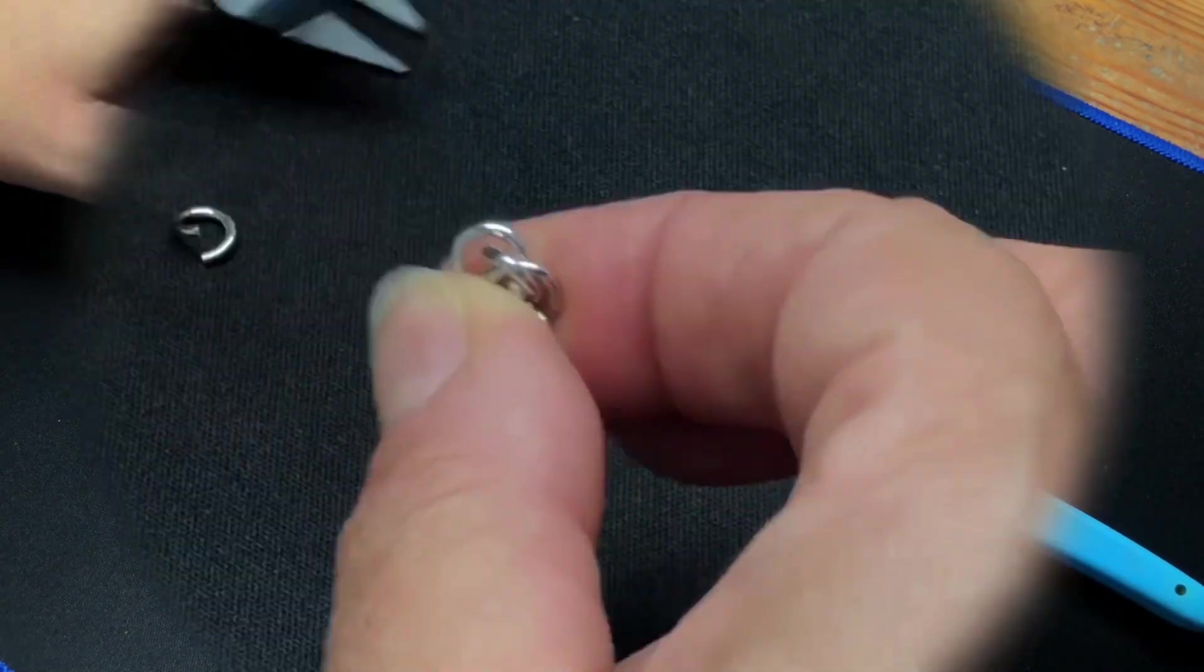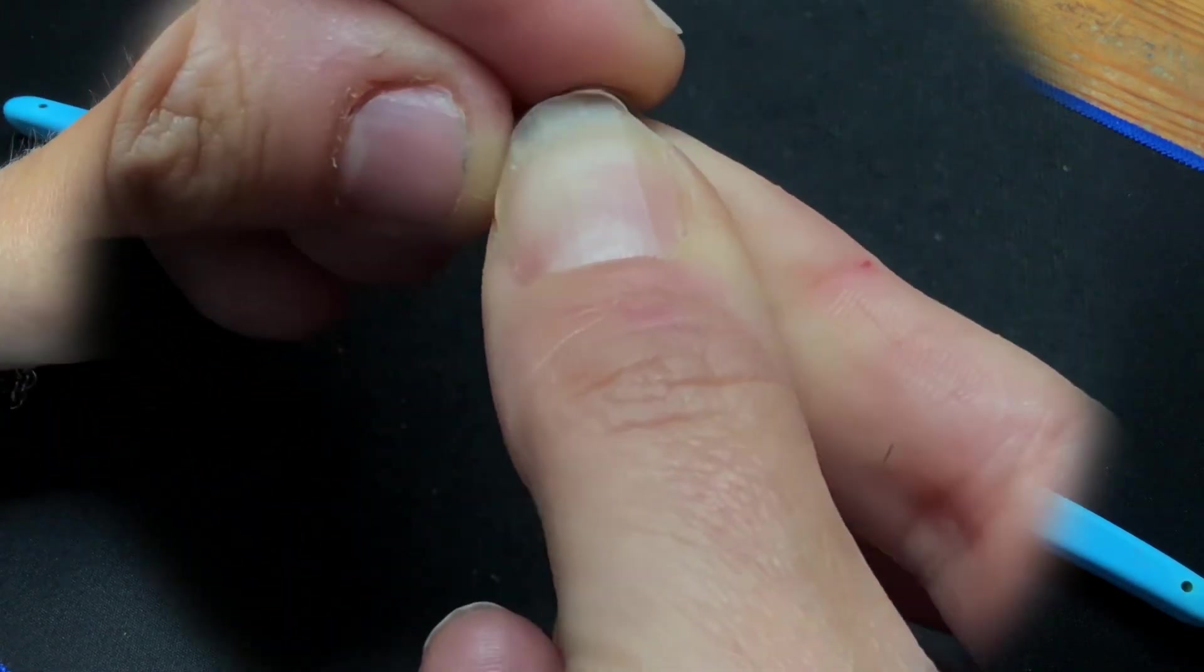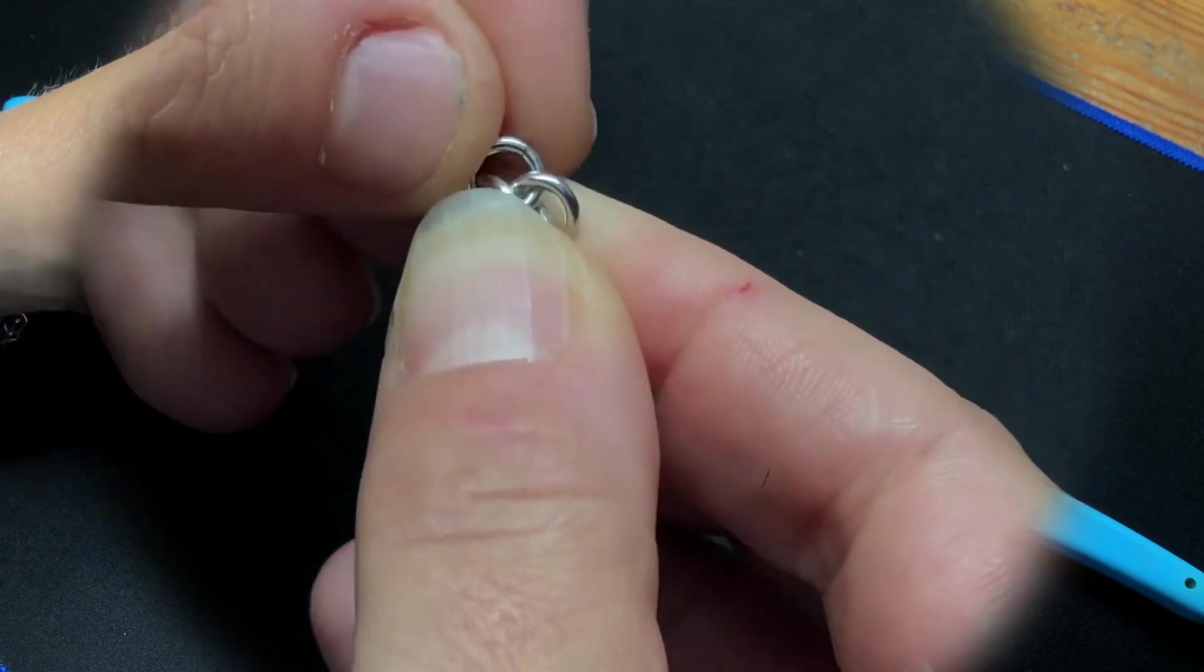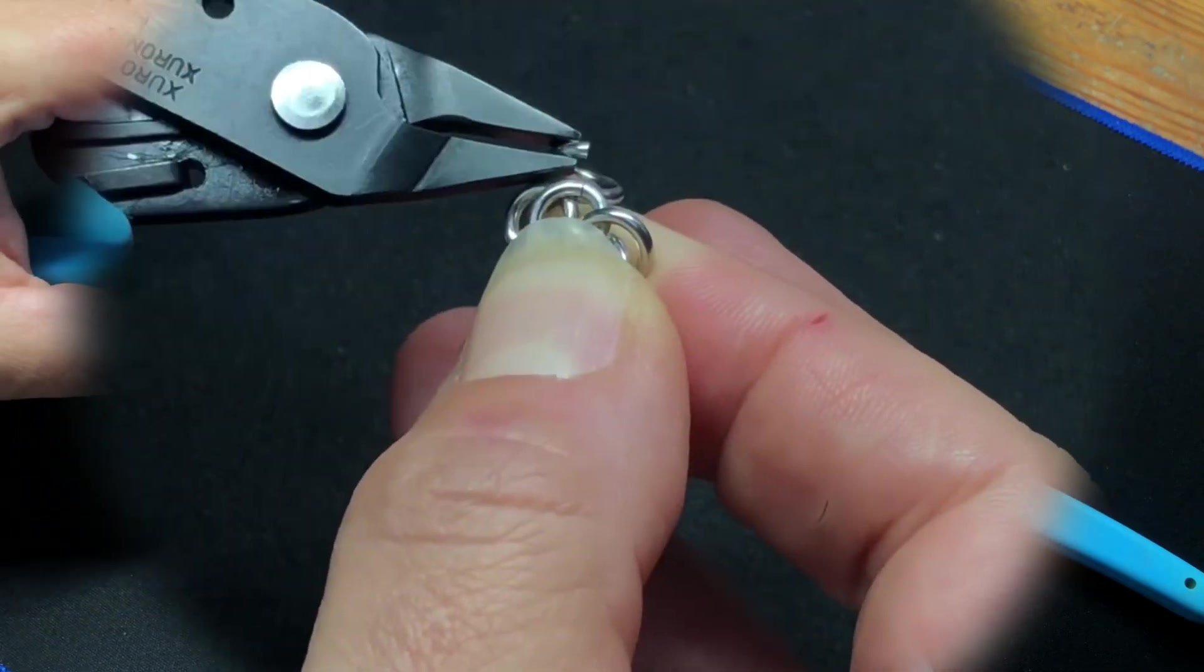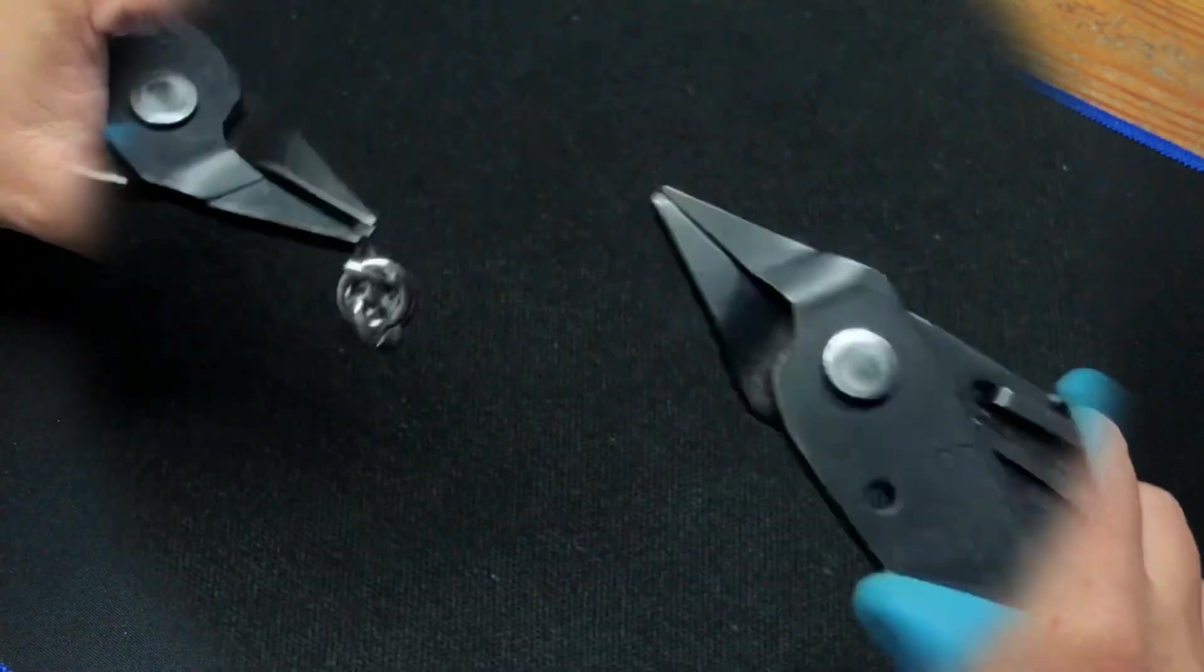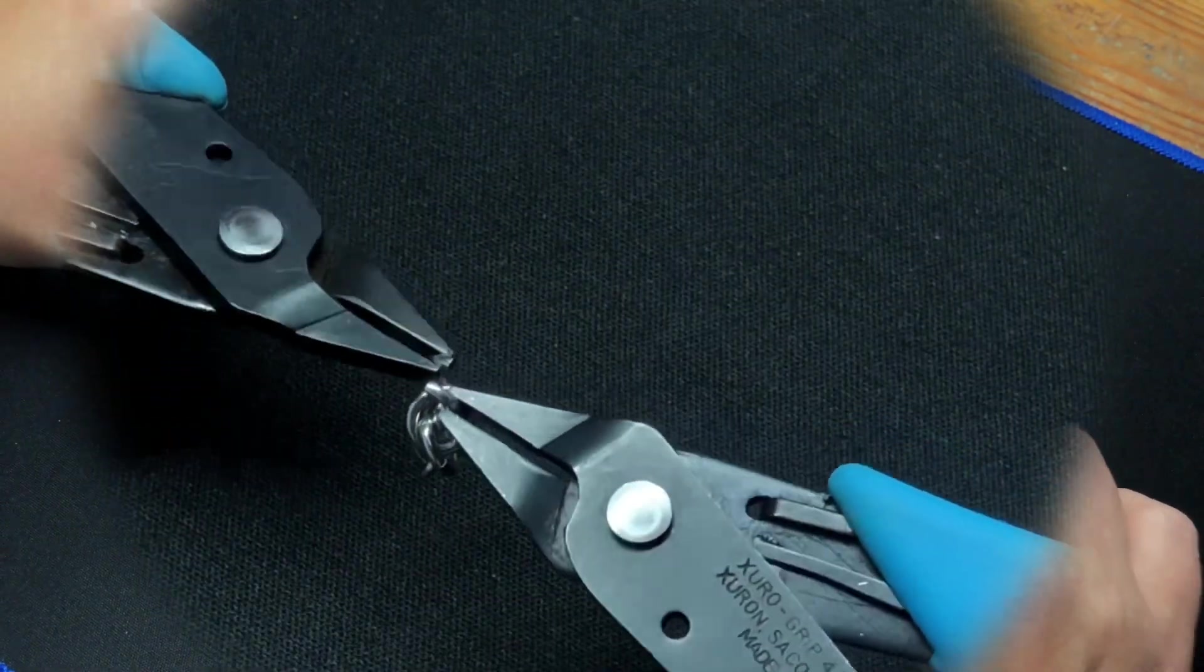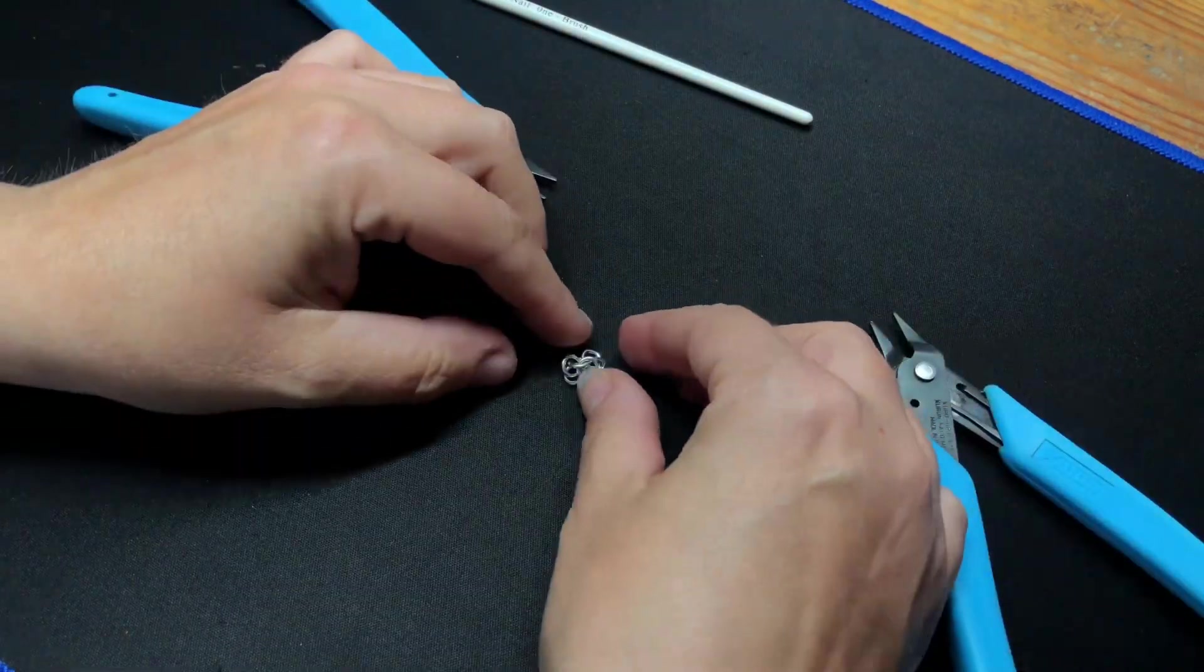I'm going to put a ring through that one and out through that one, like that. And then the other two there, we want to also put a ring through those two, in through that one and out through that one. And that's it.